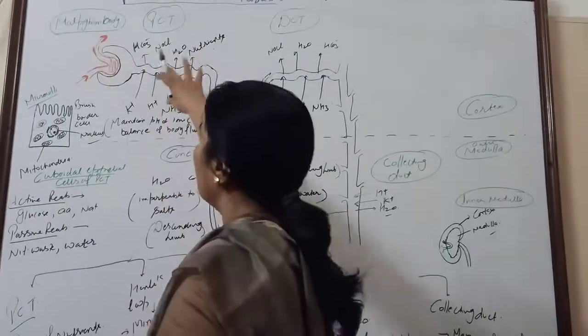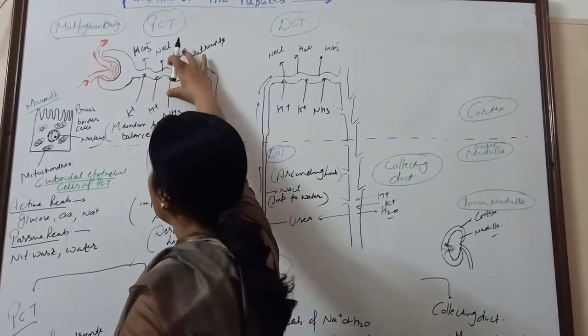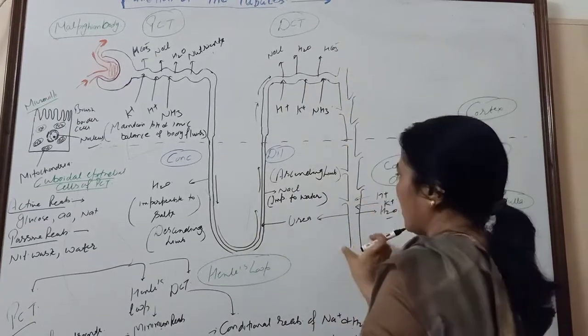The nephron, the different tubular parts we are going to discuss. The first is PCT, this one is PCT. This is Henle's loop. This is DCT, and this is collecting duct.